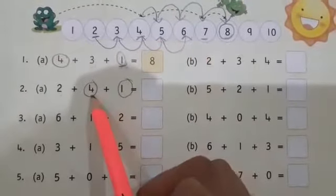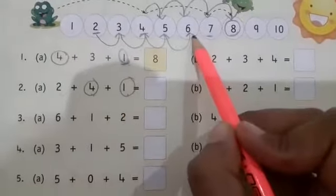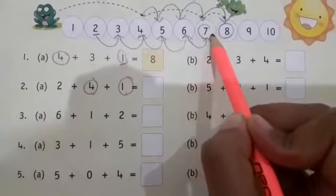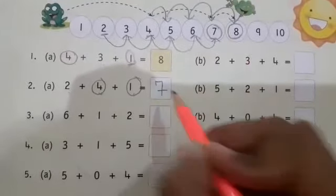We jumped four times. After that, we have to jump one more time. Here you also have to add one. So here we jumped one more time. So where did we reach? Seven. So here our answer will be seven.